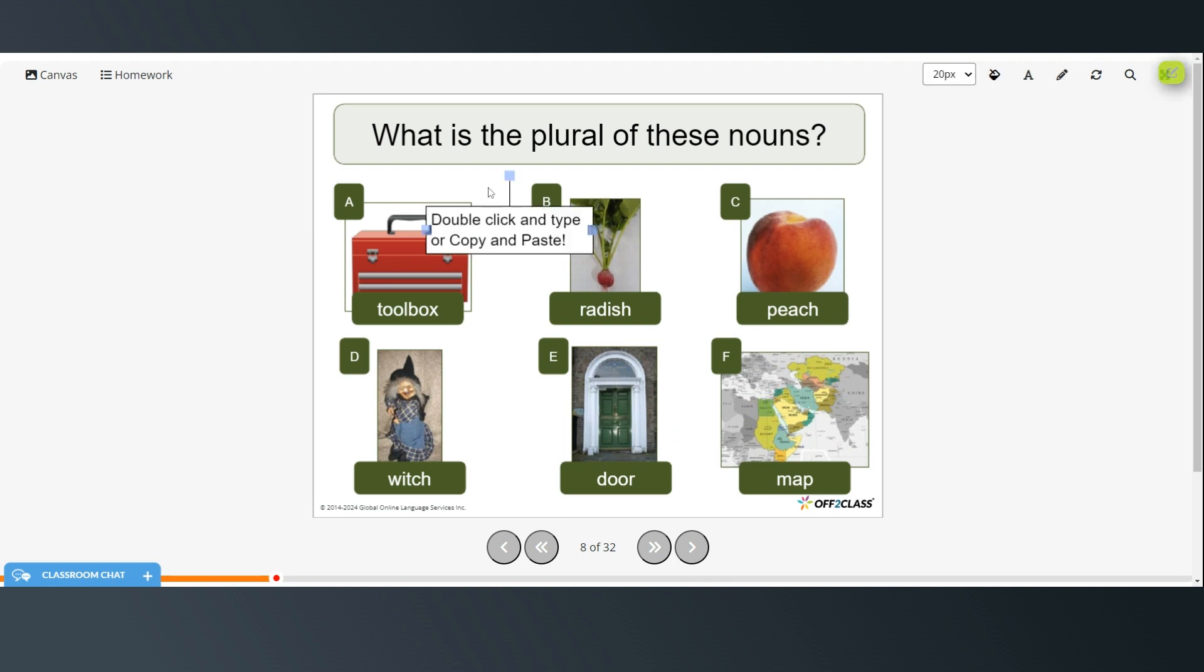Umbrella. The plural is umbrellas. And sandwich ends in a CH, so it becomes sandwiches. Alright, here are a few more. Again, you can pause the video. Try these on your own and then restart when you're ready to check your answers. So toolbox ends in an X, so we have to add an ES. So it's toolboxes. Radish ends with an SH, so it becomes radishes. And peach ends in CH, so it would be peaches.